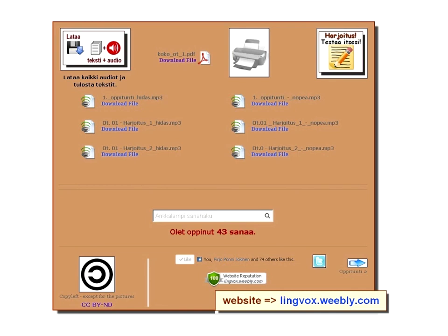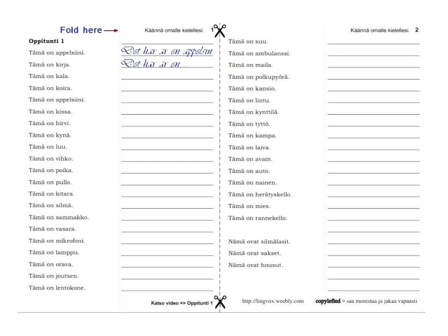It's also copy-lefted. When you print out these PDFs you get these kind of papers and you cut it in half, then you write in your own language — here it is in Swedish: the orange, the book, the fish, and so on. So the student, independent of what his mother language is, looks at the picture and decides what it is and writes it in his own language, and thus gets the vocabulary.